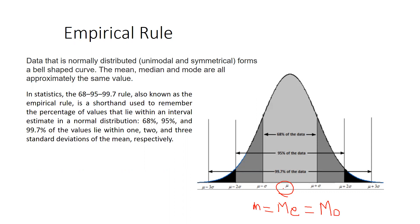When we talk about towards the right side: mean plus 1 standard deviation, then mean plus 2 standard deviations, and mean plus 3 standard deviations. Towards the left side: mean minus 1 standard deviation, mean minus 2 standard deviations, and mean minus 3 standard deviations.